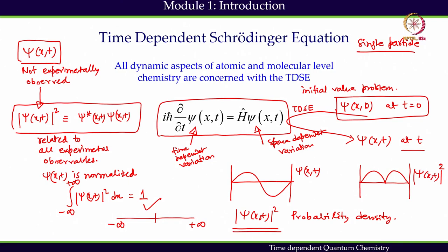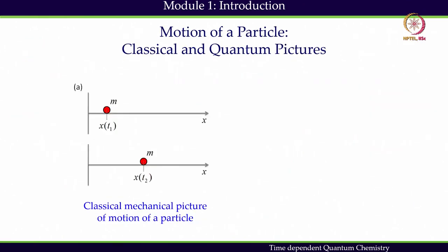To repeat: TDSE gives me the wave function. The wave function cannot be observed experimentally — I have to convert it to its density, and that density is connected to the experimental observables. In order to get the wave function through TDSE I need to know the initial wave function at t=0. With this preliminary idea, we will now move on to the solution of TDSE, but first we should clarify one more conceptual idea: the classical particle versus the quantum particle.